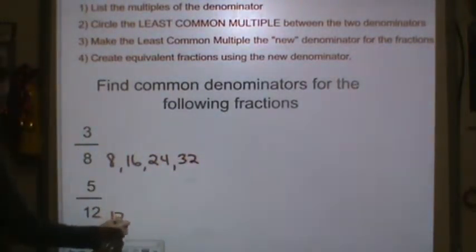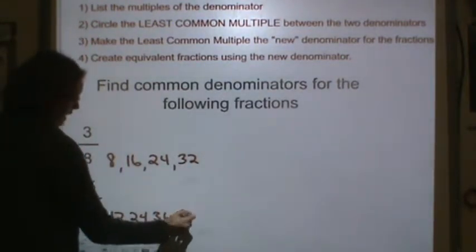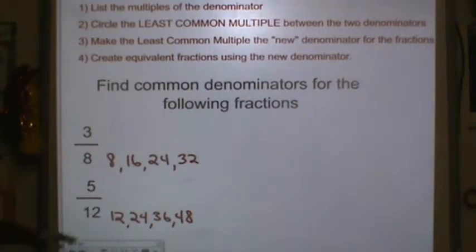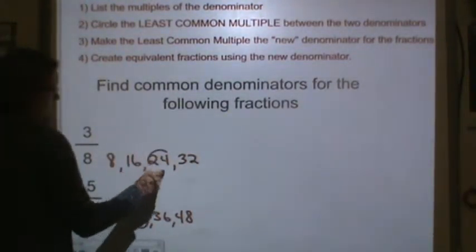12 would be 12, 24, 36, 48. Now I'm going to look at my list of multiples. The lowest one shared by both of these numbers is 24. So I'm going to circle it.